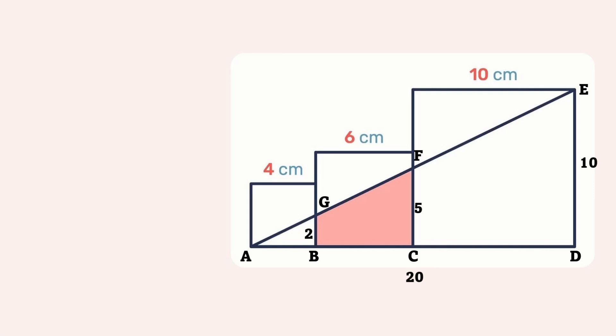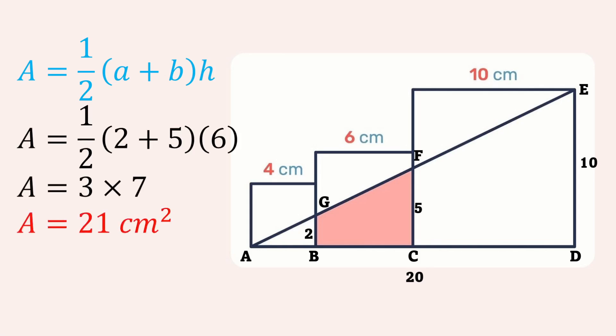We now know the length of the two parallel sides, and the perpendicular distance between them is 6, so we can use the formula half times the quantity a plus b times h. Substituting our values, we get half of 6, which is 3, and 2 plus 5 is 7. So the area is 3 times 7, which gives us 21 square centimeters.